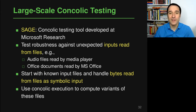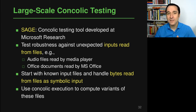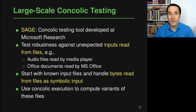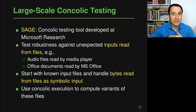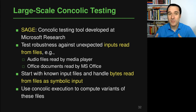For example, it takes known audio files or known office documents that are good documents, and then handles each byte in these input files as a symbolic input. This means it tries to change some bytes in these input files in order to trigger different paths that have not yet been taken while executing the tested programs. To find out which bytes to modify and how, it uses concolic execution — executing programs like MS Office, gathering path constraints, and then asking the solver which tells SAGE how to change the bytes to trigger paths not taken before.